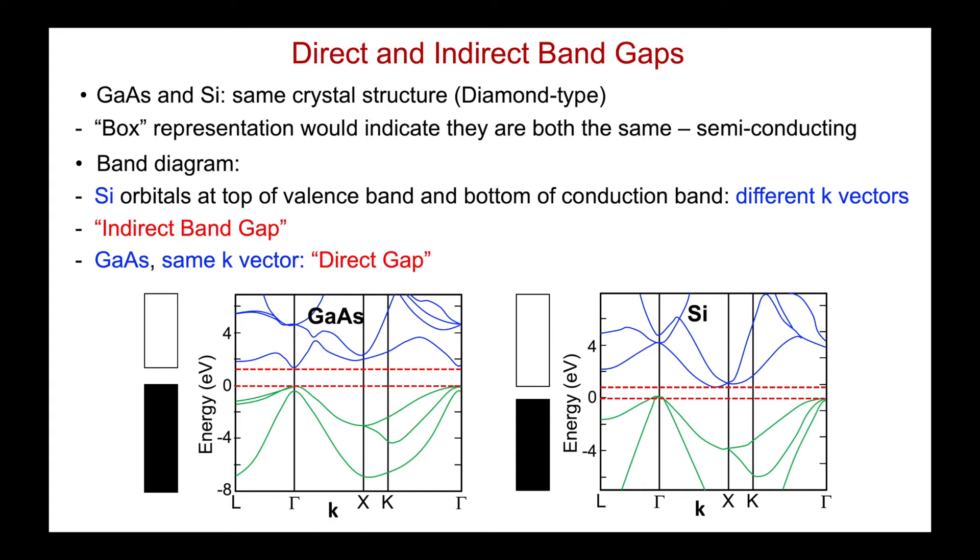And specifically, what's important here is the value of the k vector for the valence band maximum and for the conduction band minimum. The crystal orbitals at the top of the valence band here, they're at the gamma point. And those at the bottom of the conduction band, which are not at the gamma point, they're at a different value of the k vector. And because the k vector, which is related to momentum, because the k vector is different, then if an electron is to be excited from the valence band to that conduction band, it has to change its momentum. It has to change its k value. That has important consequences for light absorption.